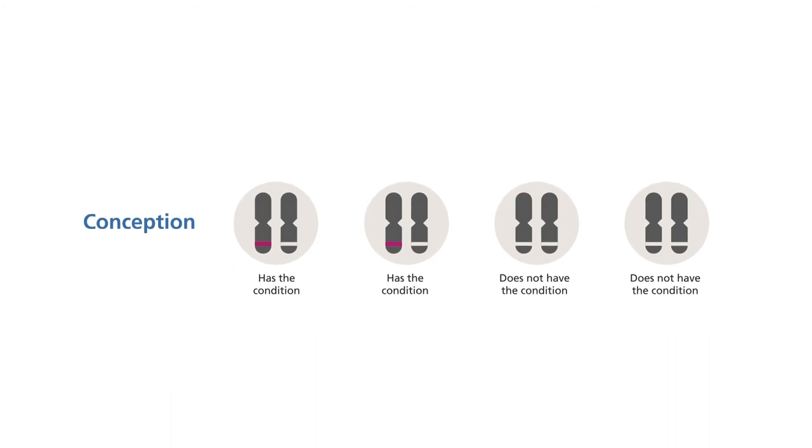Each one of the four possible outcomes shown here is equally likely. In each pregnancy, there is a 1 in 2 or 50% chance that a child will inherit the altered gene associated with the autosomal dominant condition.